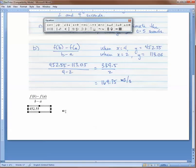452.55. It helps if I remember the fraction. 452.55, I've just figured these out on the calculator. 4 minus 2 equals another fraction. 339.5 over 2.